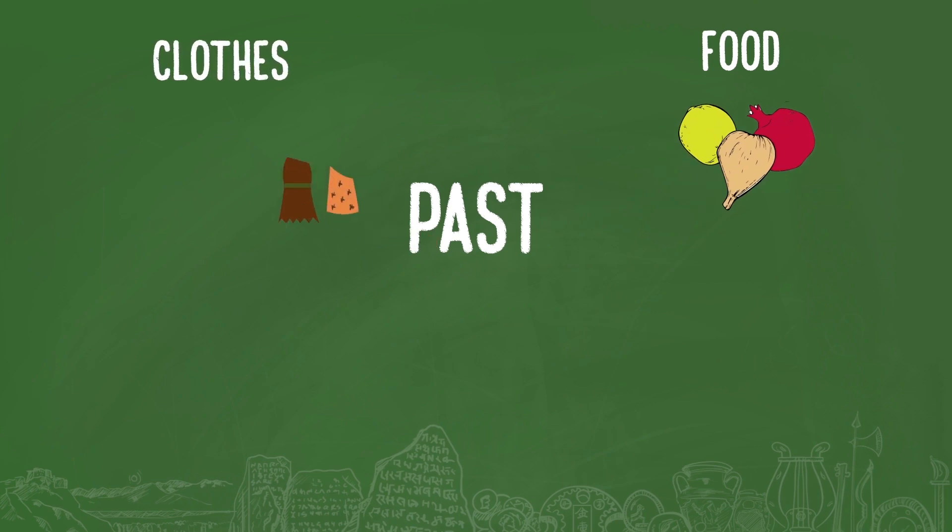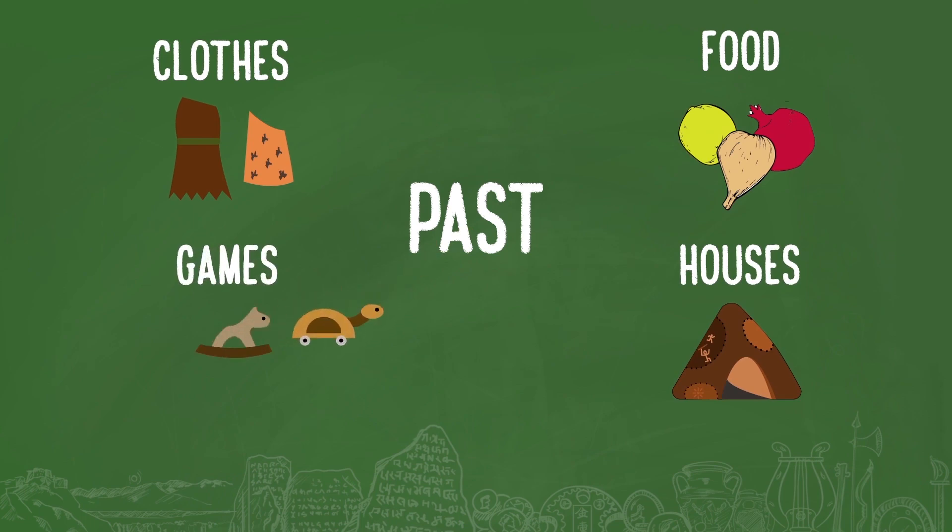There are several things which we can find out about the past, like what people ate, what type of clothes they wore, what houses they lived in, what games children played, and many other things.